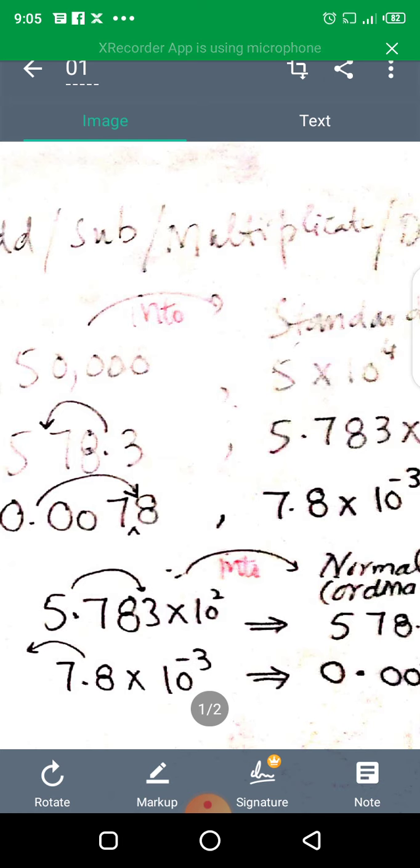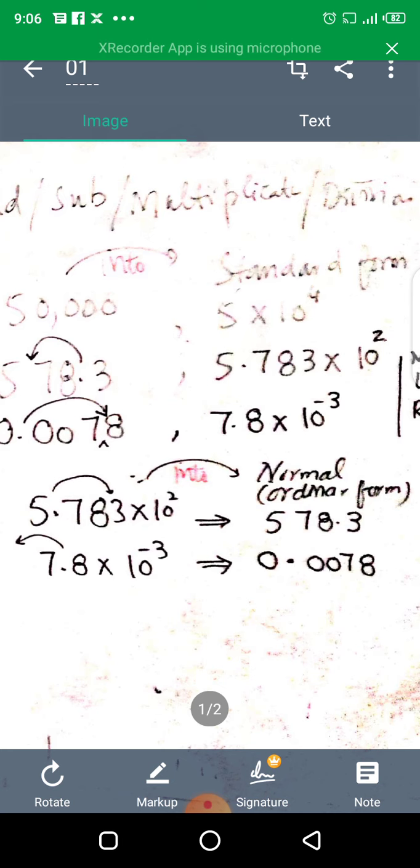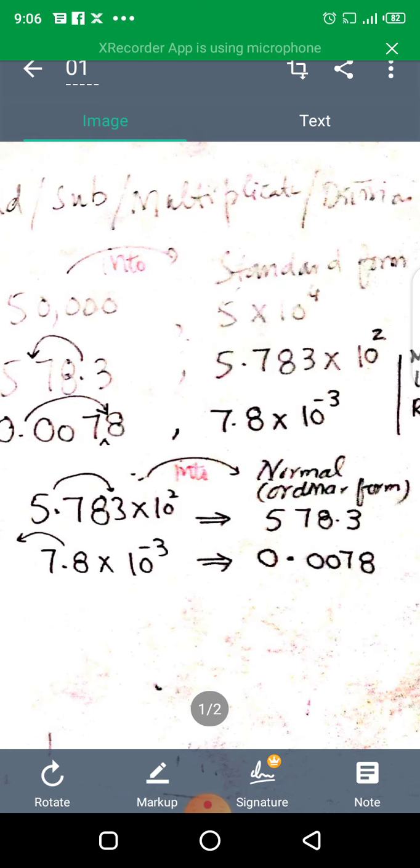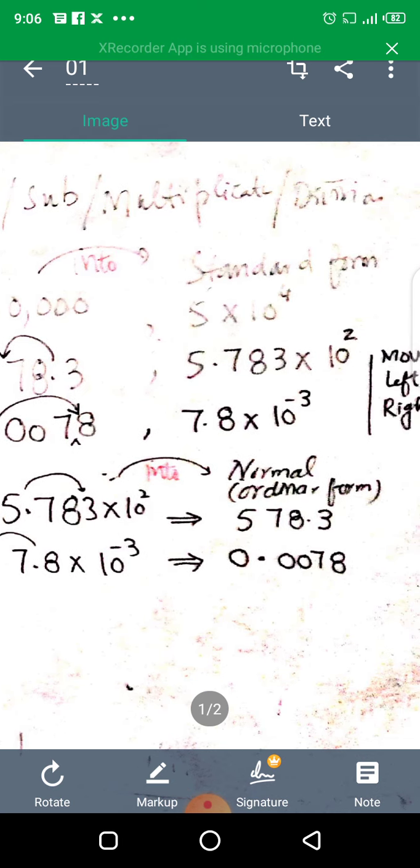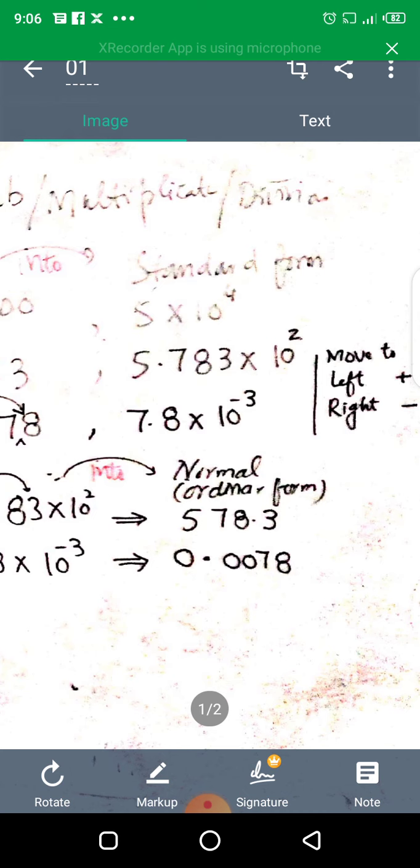Then we have two digits, so we have a standard form that will be 5.783 multiply by ten raised to power two. 5.783 multiply by ten raised to power two.